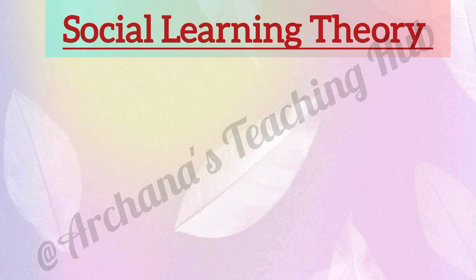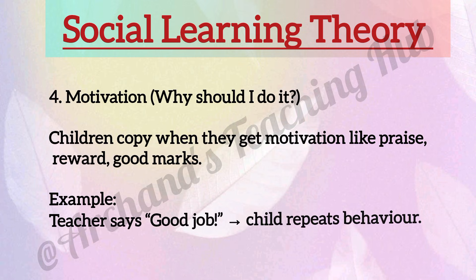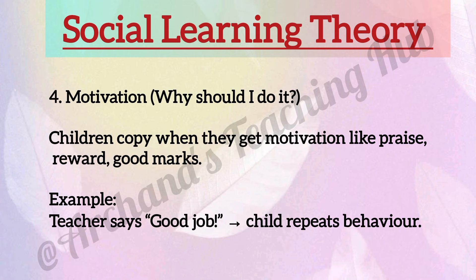Step three: reproduction means do it. Children try to copy the behavior. For example, the student draws the picture by himself. Step number four: motivation — why should I do it? Children copy when they get motivation like prizes, rewards, good marks. For example, the teacher says good job and the child repeats the behavior.